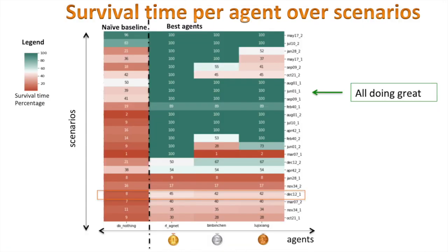To select a scenario on which to compare agents with probably interesting different behaviors, we can take a look at the survival time heatmap. For each scenario and each available agent, you can see here the percentage of time the agent survived. Red color is for early blackout, and green color when completing overall the scenario. Here we have the naive baseline, the do-nothing agent, and we also have the top three agents represented from the competition for comparisons.